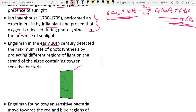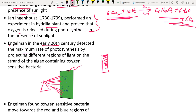Engelmann took a strand of algae (a photosynthetic green organism) and introduced oxygen-sensitive bacteria (represented as blue dots). He projected light through a prism, which splits it into colors VIBGYOR.